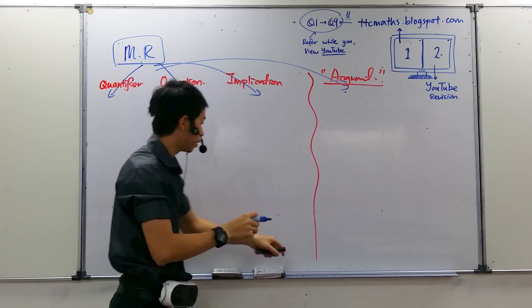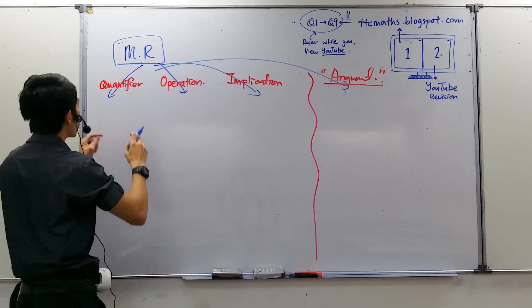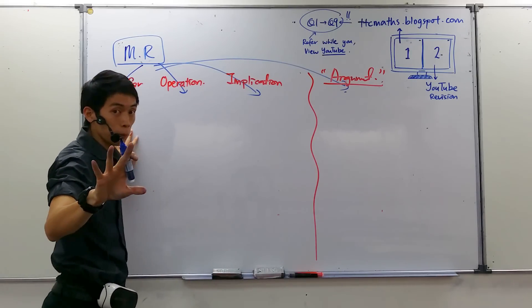So these are the subtopics. What happens is — you see how I differentiate them? Under a quantifier question, they won't give you a subtopic label, so you will need to refer to the question and determine it yourself. Now, under quantifier, how many statements will they give you? Just one statement. And when you come to operation, they will give you two statements.